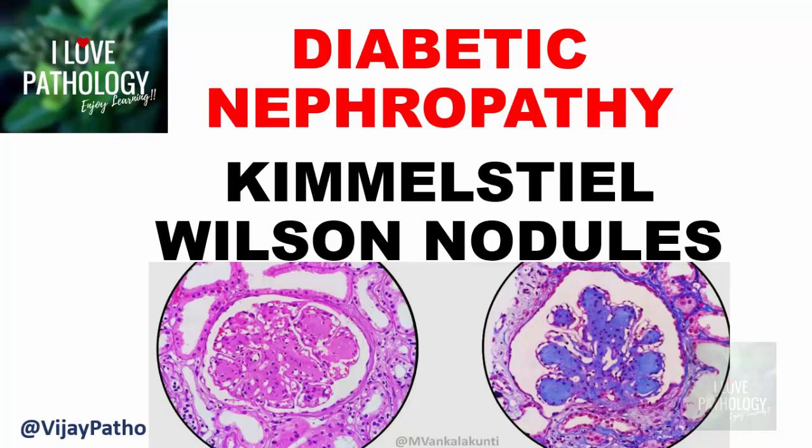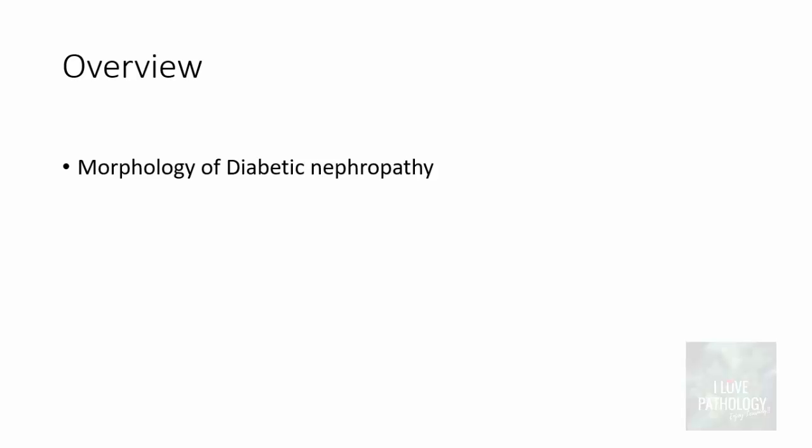Hello everyone, welcome to this short tutorial from Pathology Made Simple at I Love Pathology. Today's topic is diabetic nephropathy. We will be discussing in detail about the morphology of diabetic nephropathy, but before that we will understand the pathogenesis of complications in diabetes — specifically how complications occur whenever there is hyperglycemia — and then move on to the morphology of diabetic nephropathy.